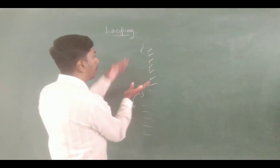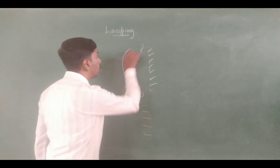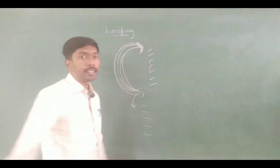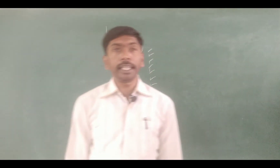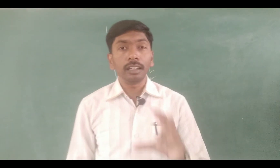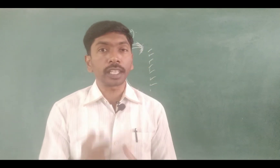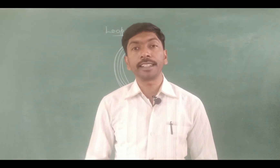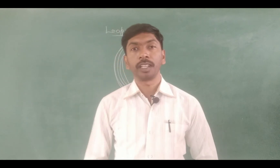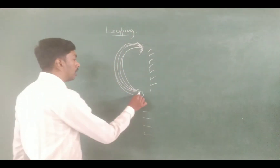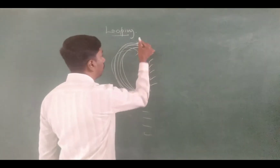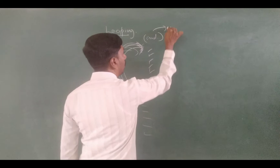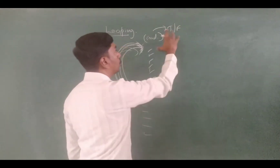So looping means a particular block of statements executes repeatedly. The block of statements is repeatedly executed until one condition becomes false. That particular block of statements will keep executing repeatedly. Looping means repeated execution, controlled by one condition — check if the condition is true.